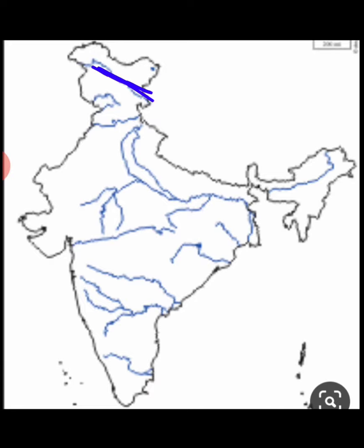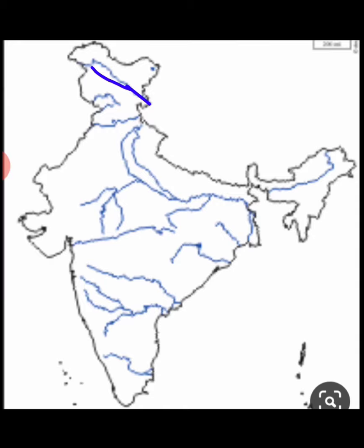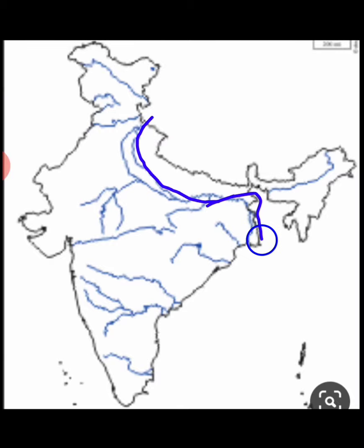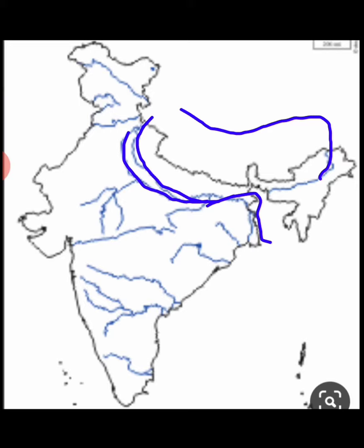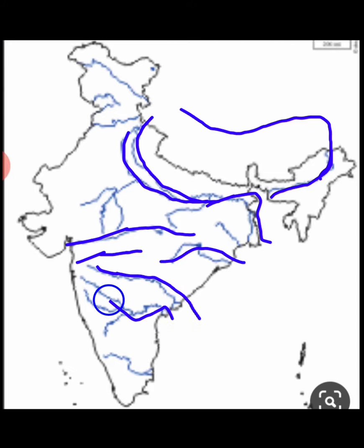So to recap — Indus river, we have left only the India portion here. Its tributaries are Sutlej, Ravi, Beas, Jhelum, and Chenab. Then this one is Ganga, and below Ganga is Yamuna. For Brahmaputra, we have kept only the India portion — cut out the Tibet and Bangladesh parts. Then here you have Narmada, below that Tapi, and then Mahanadi, Godavari, Krishna, and Kaveri.